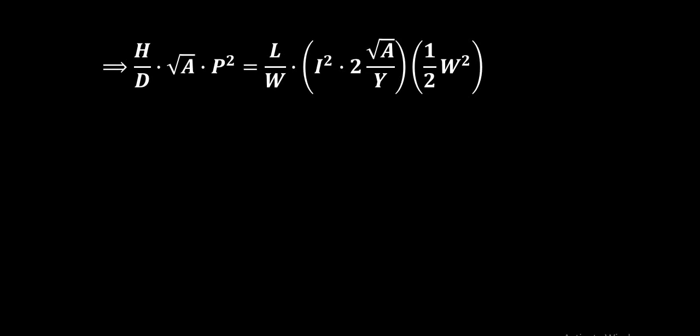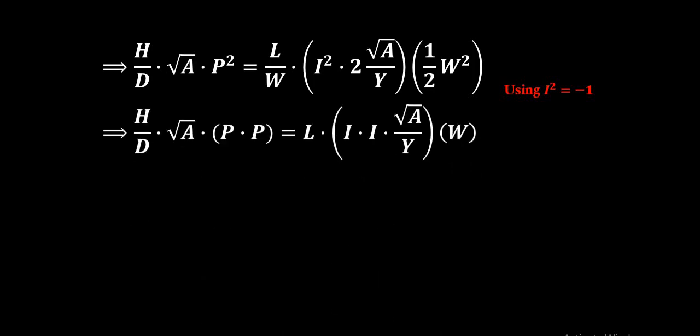In place of minus 1 we can write i square because the value of i square is equal to minus 1. So in place of minus 1 we will write i square into 2 root A by Y as usual, and the other term is half of W square. Now in the right hand side, 2 and half will get cancelled, thereby giving us H by D into root A.